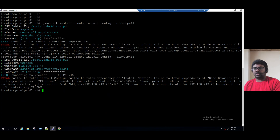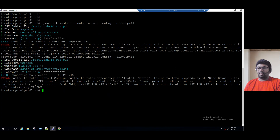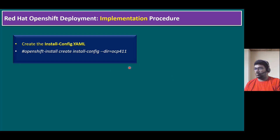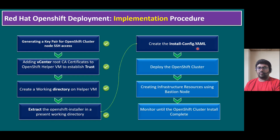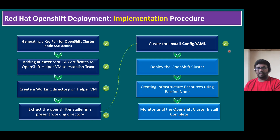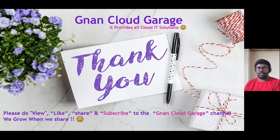Maybe the trust relationship was extracted when we had an incorrect configuration. So what we can do is implement the trust relationship again. I will fix it offline. In the next session I will show you the further deployment procedure. This is an error I can fix — it's a configuration issue with DNS. In the next session I will show you how to deploy the OpenShift cluster. So that's it. Create install-config is having some issue due to DNS configuration. I will fix it. Thank you. If you're watching this video for the first time, please like, share, and subscribe to the Gnade Cloud Garage channel. If you're already subscribed, I appreciate all your support. Bye for now.